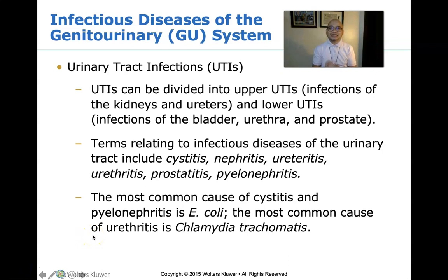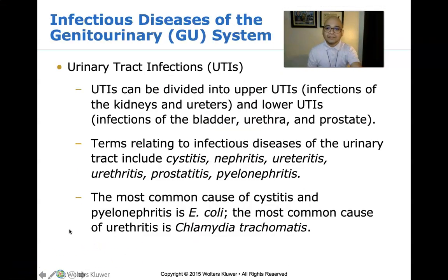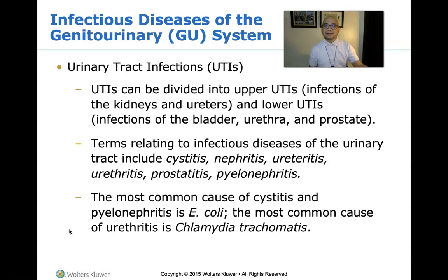Nephritis is a condition in which the nephrons — the functional units of the kidneys — become inflamed. More specifically, the term glomerulonephritis is used. This can adversely affect kidney function, and in worse cases may warrant dialysis if glomerular filtration is affected. Ureteritis is the inflammation of the ureter. It is rare and most often associated with either cystitis or pyelonephritis.